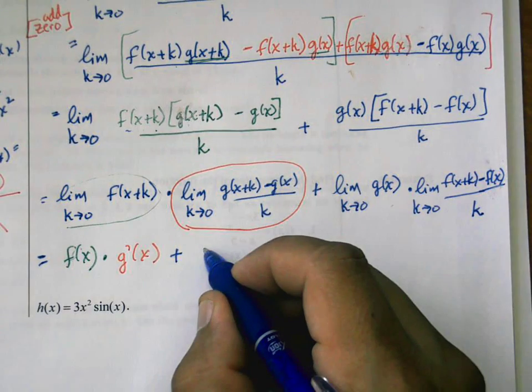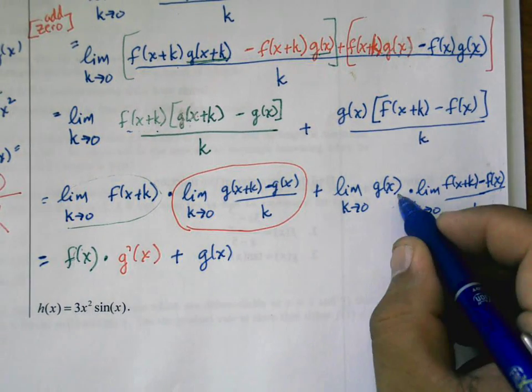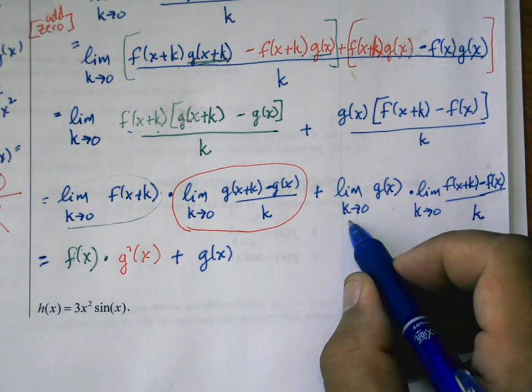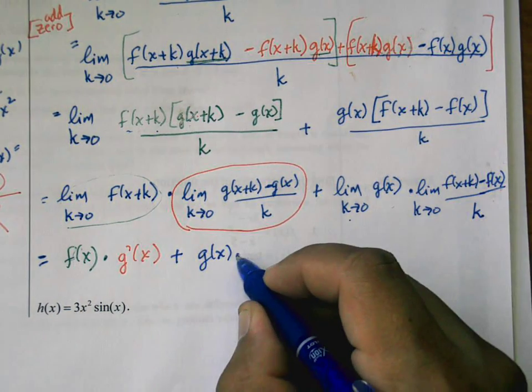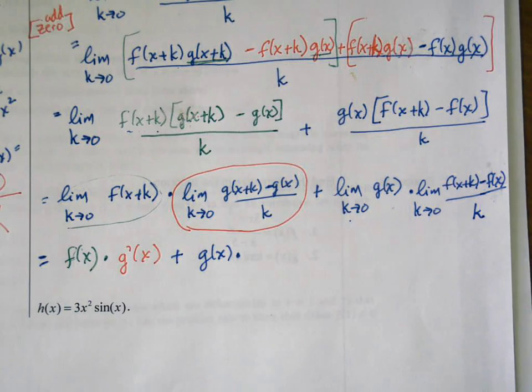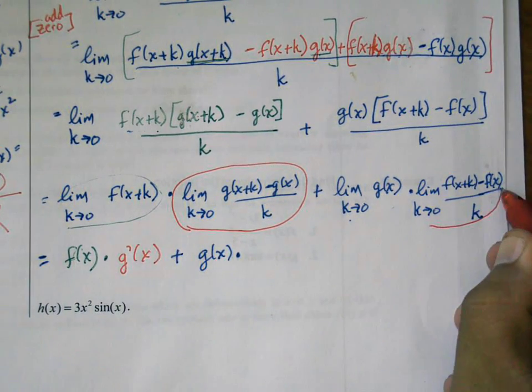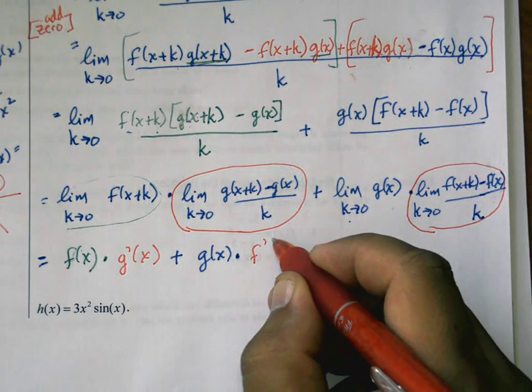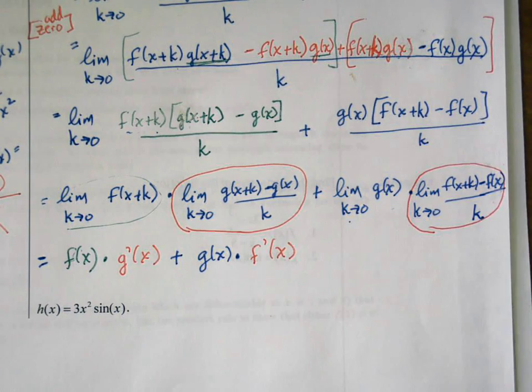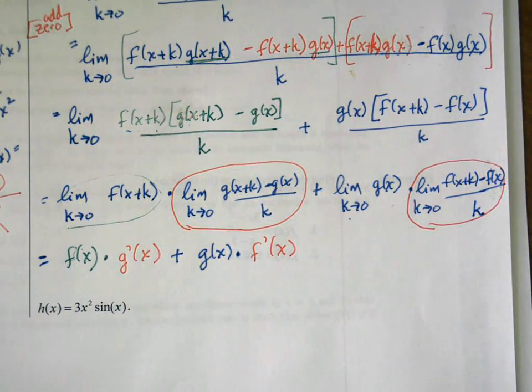This limit here is just g of x because there's no k in here. The variable that we're taking the limit of is not even involved in here, times—and if you look at this part, this part looks exactly like the derivative of f. So that's just f prime.